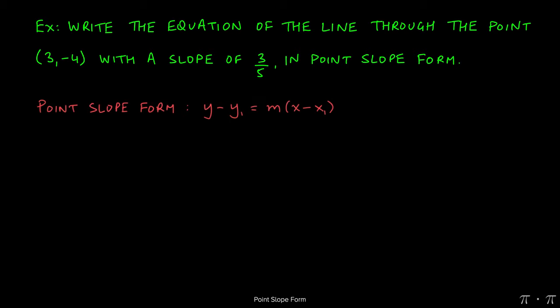We start this problem by writing down the formula for the point-slope form, which is y minus y1, our y-coordinate, equals the quantity m times x minus x1, which is our x-coordinate, and m represents the slope.